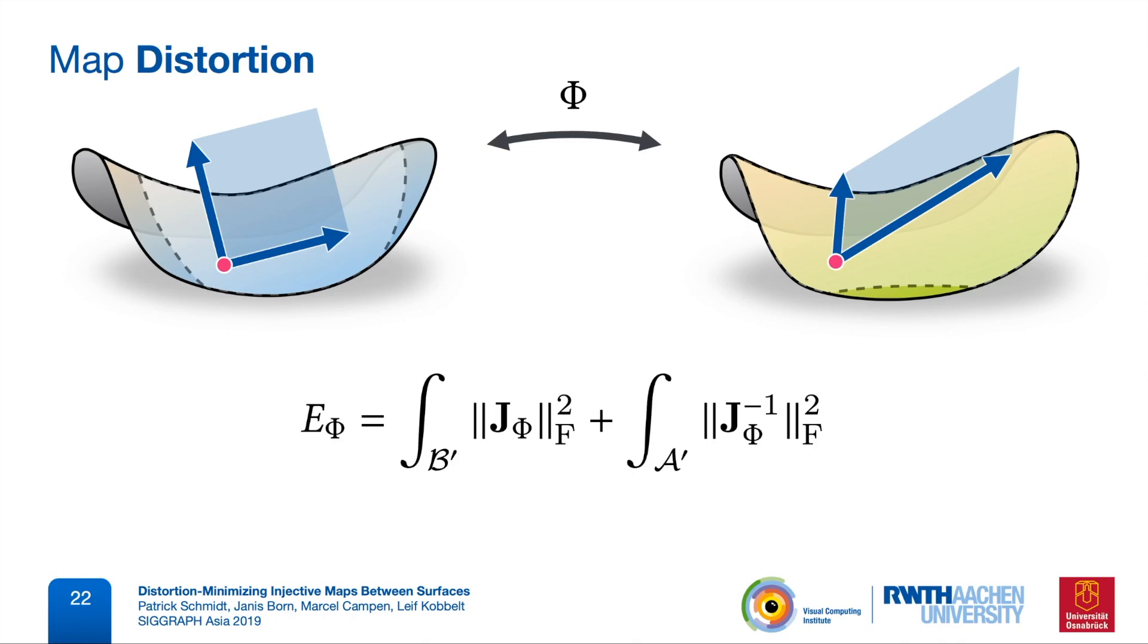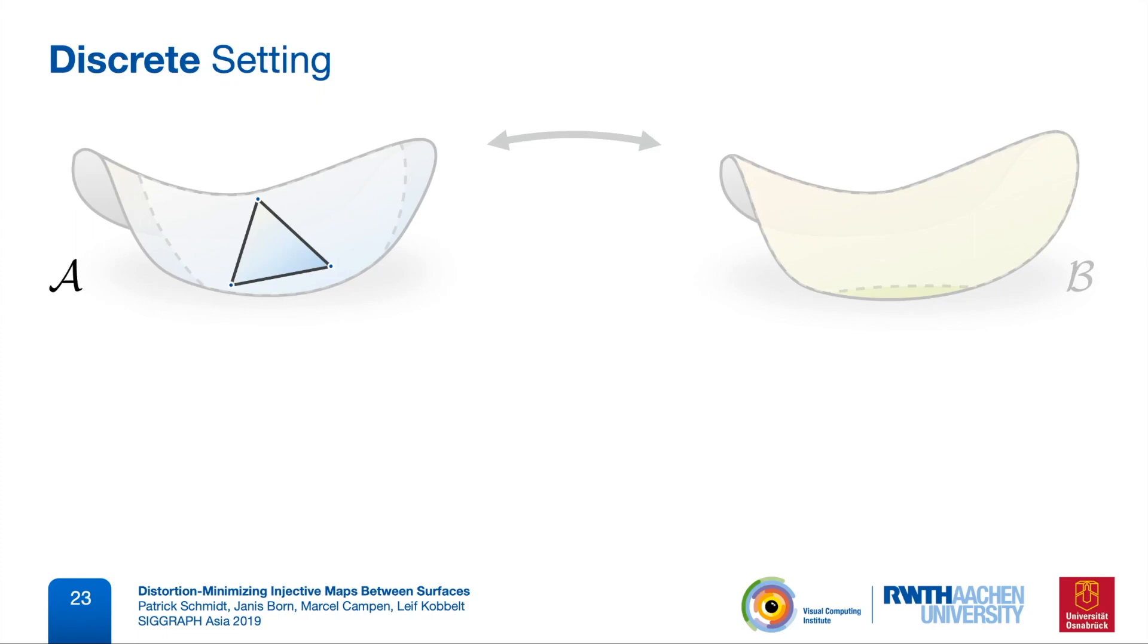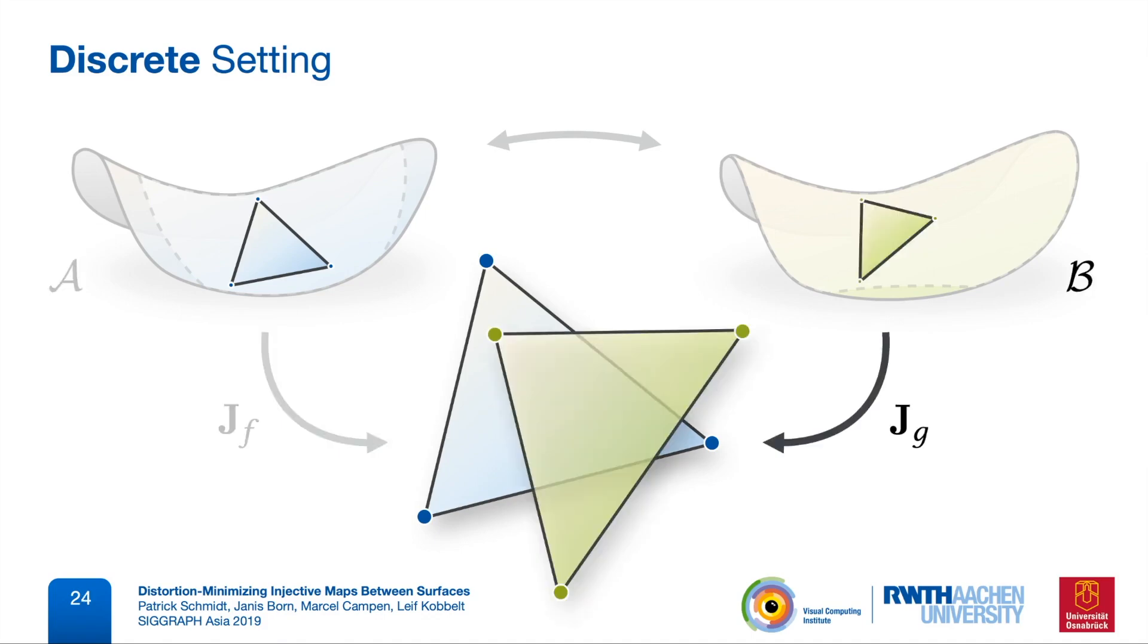Now let's have a closer look at this Jacobian in our map construction and in the discrete case of triangle meshes. The first parameterization function, F, is defined per vertex of mesh A, so it's a piecewise affine map in the triangulation of A. This means that its Jacobian is constant per triangle of A. The second map G is of the same type. Its Jacobian is also piecewise constant, but now in the triangulation of B.